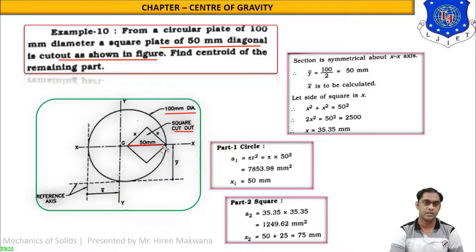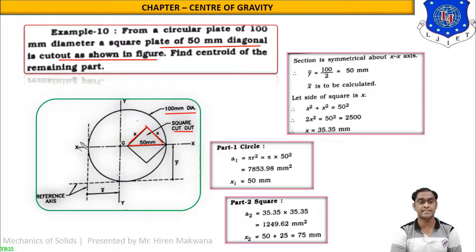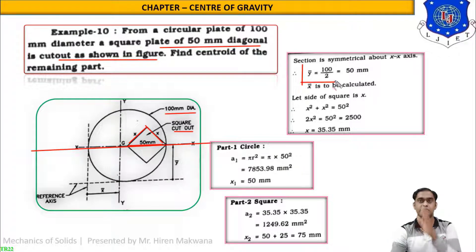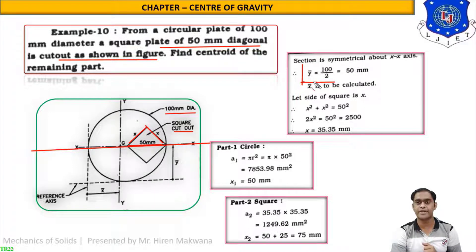For a square, all four sides are equal. The section is symmetrical about the x-axis — drawing the x-axis from the center, the figure forms a mirror image above and below, so y-bar is directly equal to height/2. Height is the diameter = 100 mm, so y-bar = 100/2 = 50 mm. Now x-bar needs to be calculated.